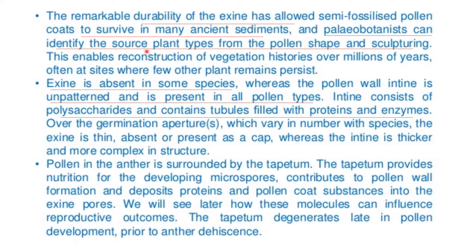Paleobotanists can identify the source plant type from pollen shape and sculpture. This enables the construction of vegetation histories over millions of years, often at sites where few other plant remains persist. Exine is absent in some species, whereas the pollen wall intine is unpatterned and is present in all pollen types. Intine consists of polysaccharide and contains tubules filled with proteins and enzymes.